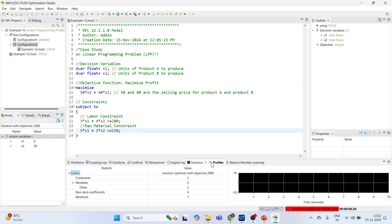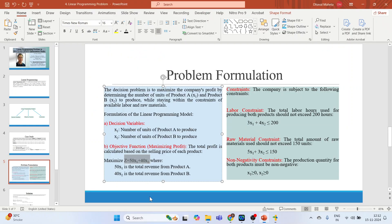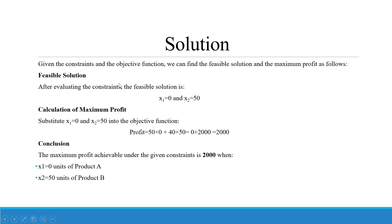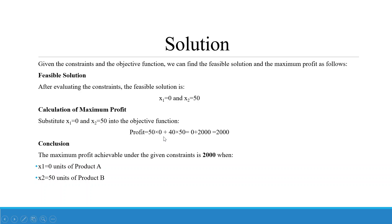Now we interpret the results. Given the constraints and objective function, the feasible solution is: x1 should not be produced (zero units of Product A) and x2 should be produced in the quantity of 50 units. Substituting x1 = 0 and x2 = 50 into the objective function: Z = 50×0 + 40×50 = 0 + 2000 = $2000. Conclusion: the maximum profit achievable under the given constraints is $2000.